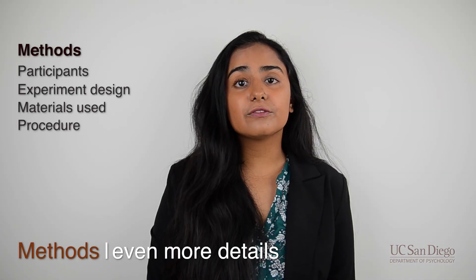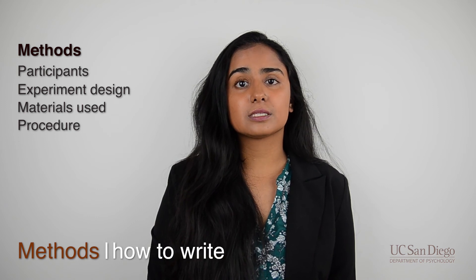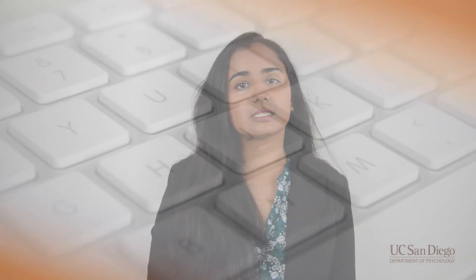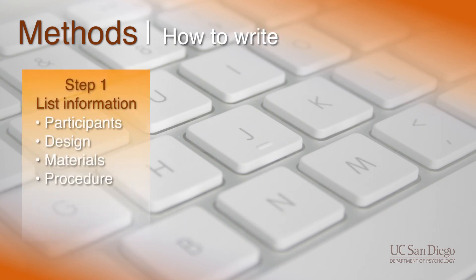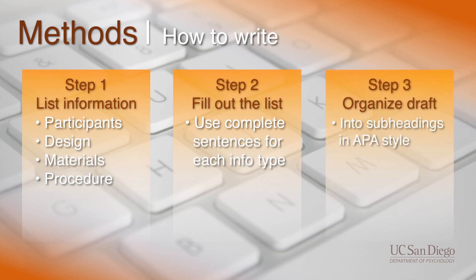Now, depending on the type of study you did, you may need to include even more information. This may seem challenging at first, but you can write almost any methods section using this very simple procedure. First, make a list of all the different types of information that someone would need to replicate your work. Then, fill out that list using complete sentences for each information type. Organize what you have into separate subheadings in APA style, and after that, the first draft of your methods section is complete.